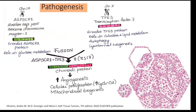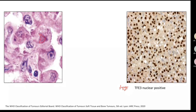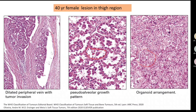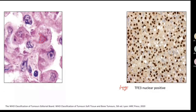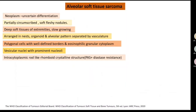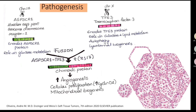Tumor morphology is defined by the genes. Are these tumor cells showing nuclear pleomorphism, or are they the same-looking? Pleomorphism means one cell will be small, one cell will be big — every cell will be different. These cells are not so different; they are monotonous. This means it is a translocation-associated sarcoma.